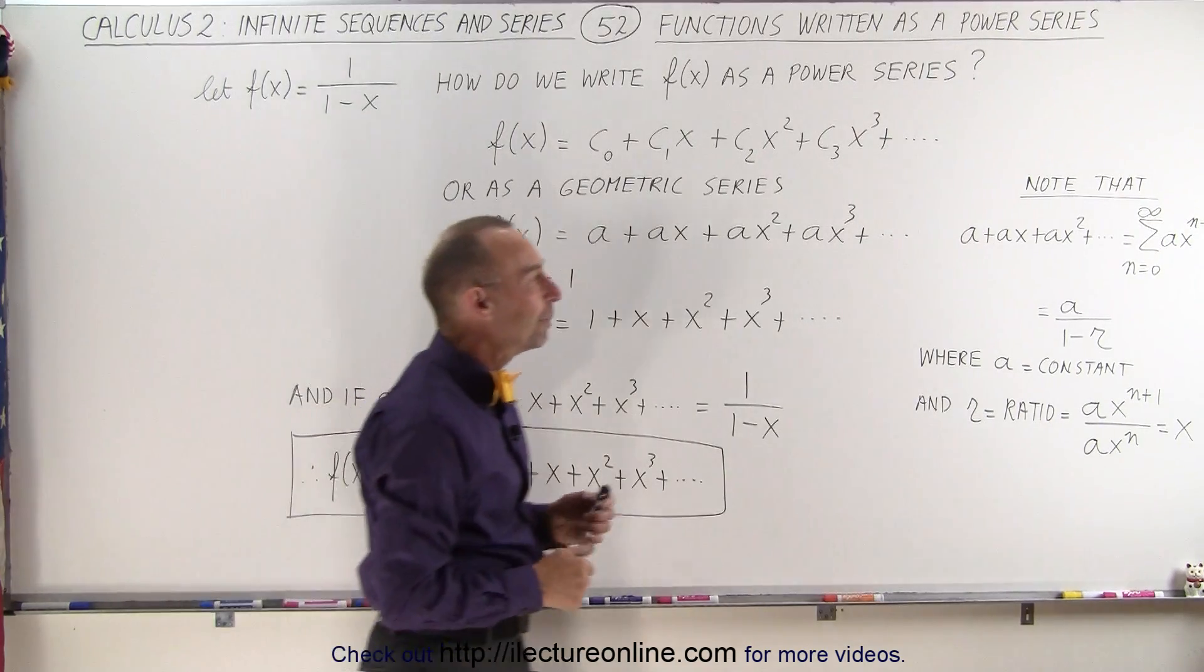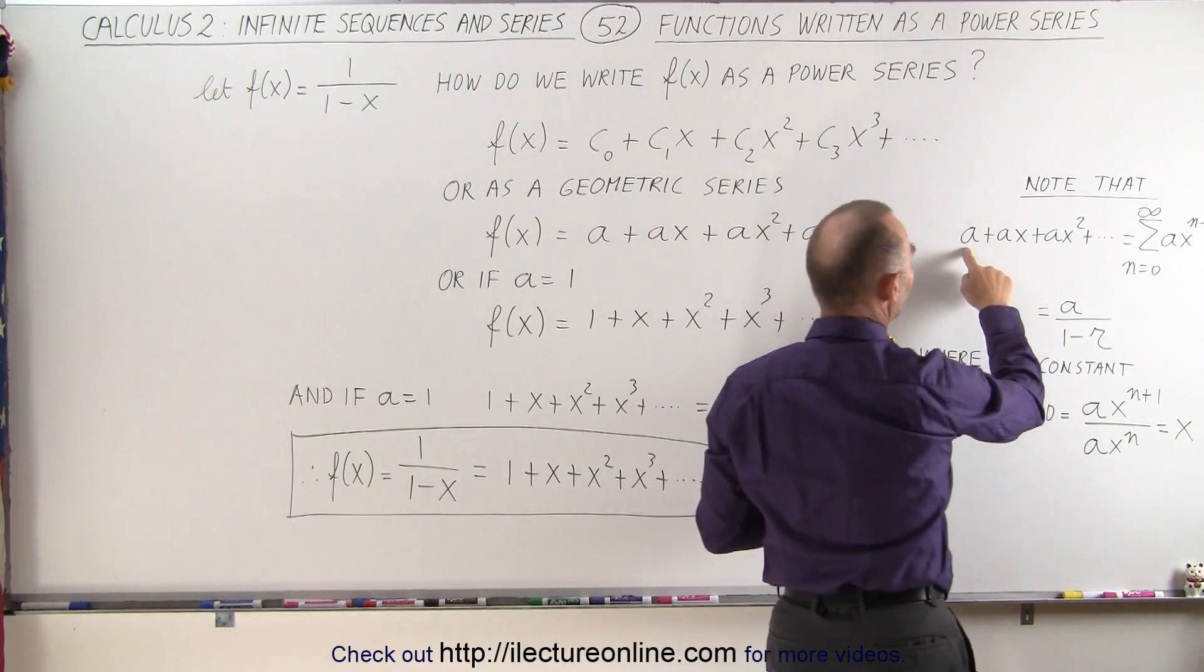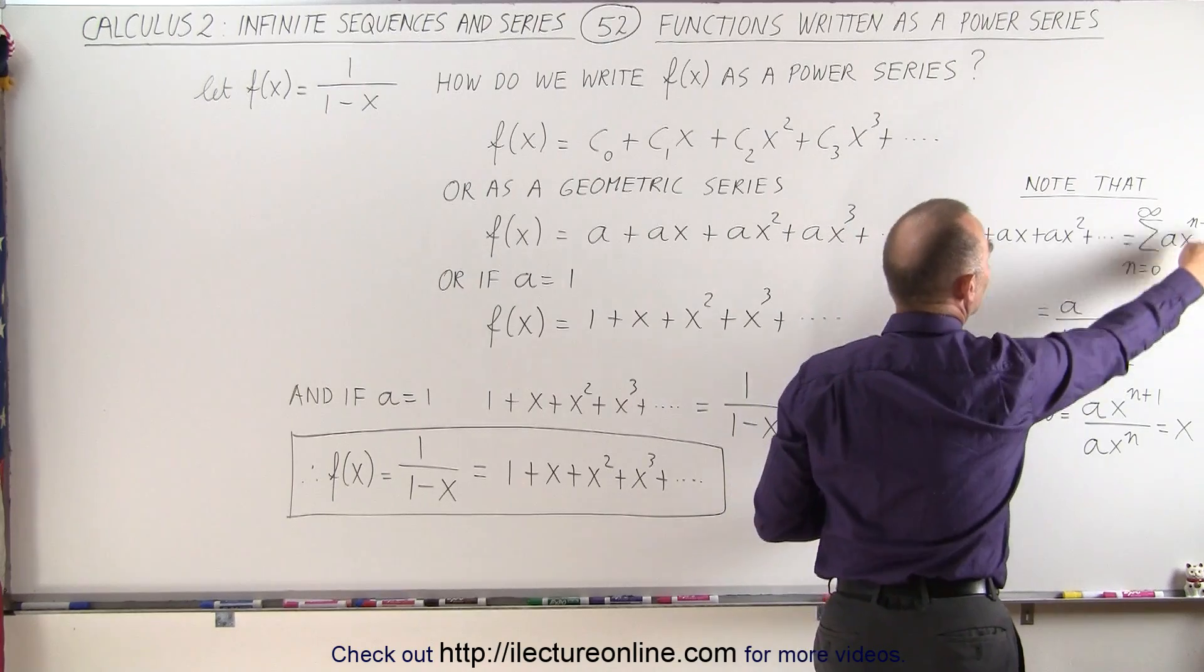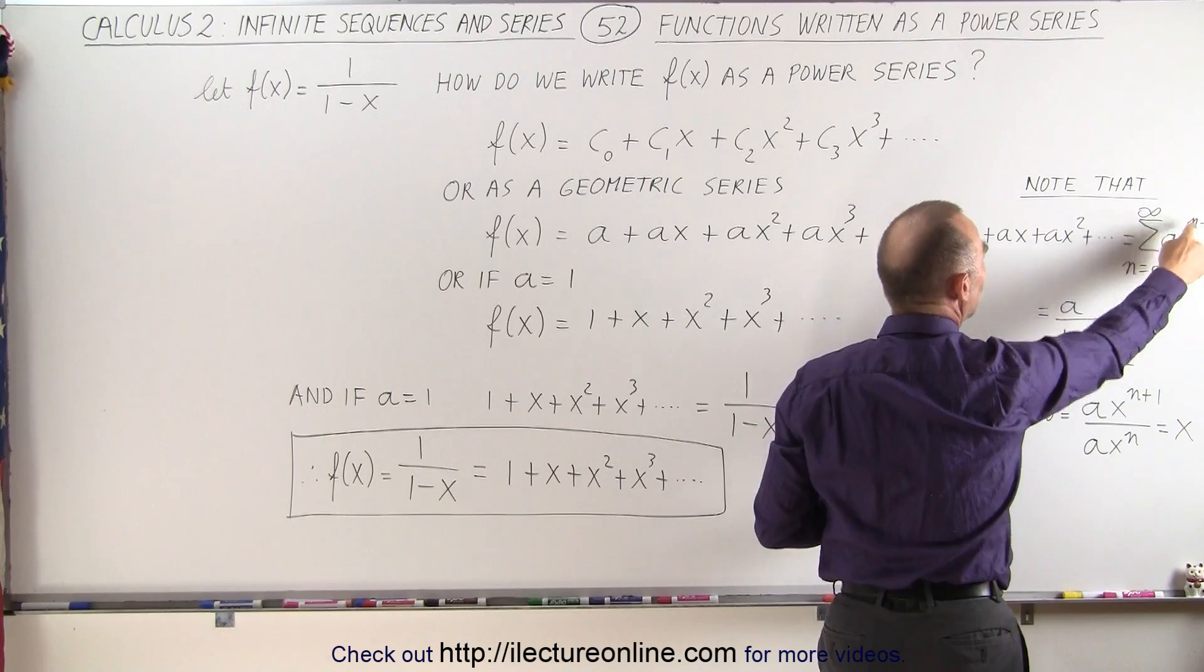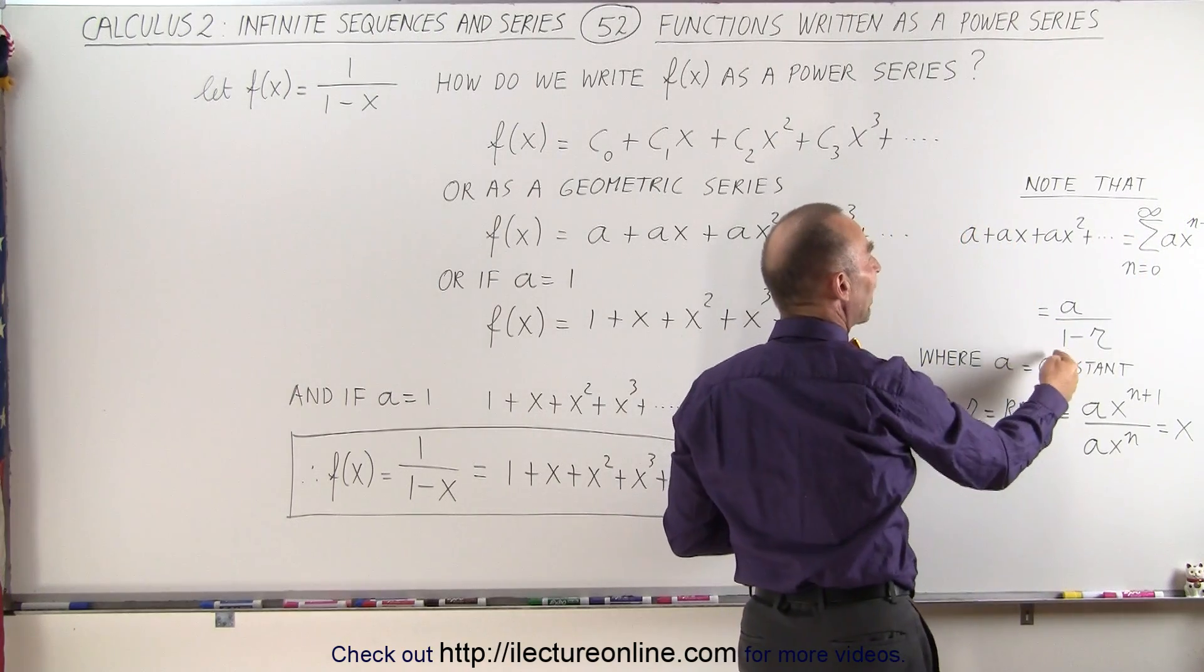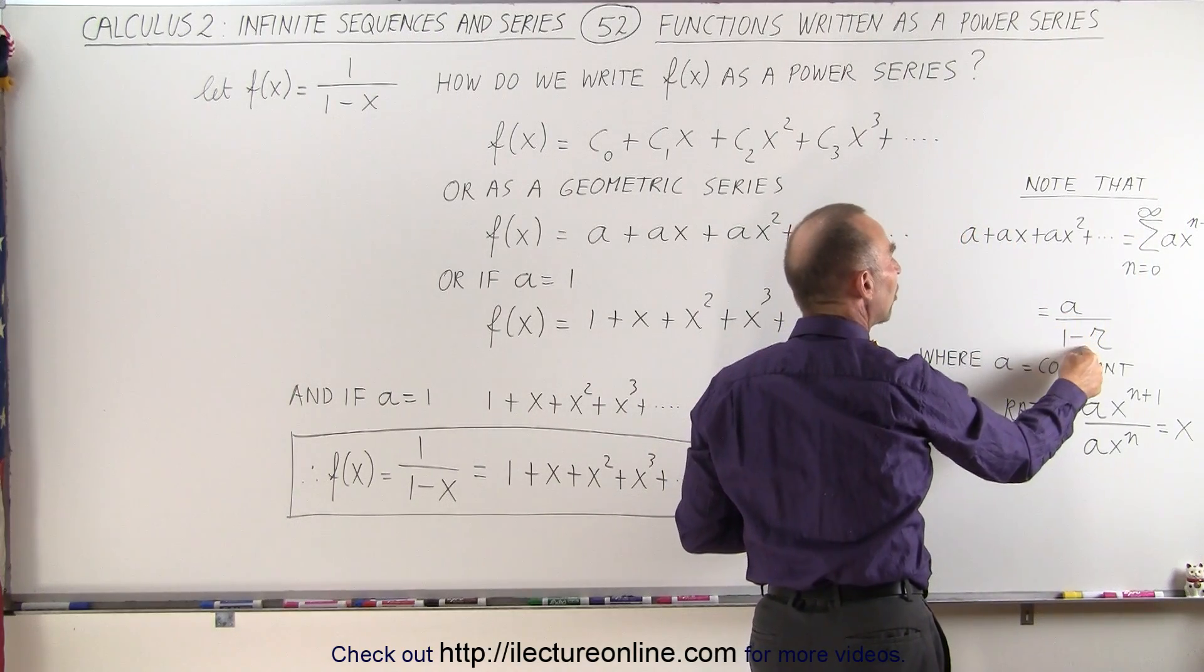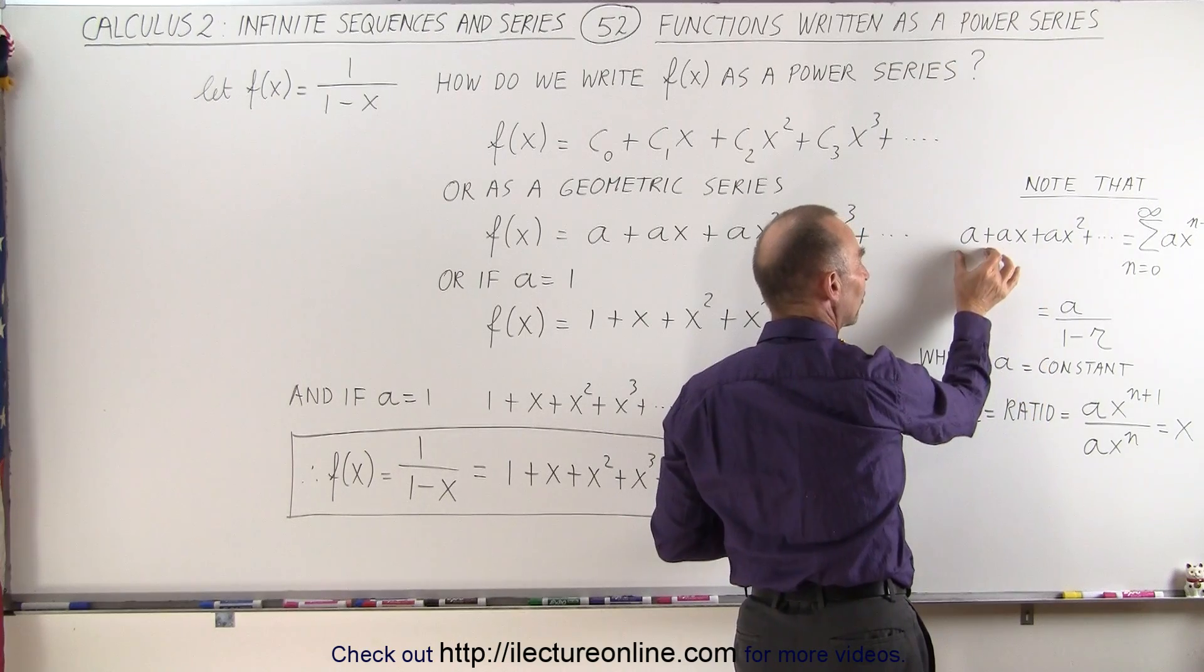Now, we have to remember that a geometric series like this can be written as the infinite summation, n equals 0 to infinity, of a times x to the n minus 1, which is defined as a divided by 1 minus r, where a is that constant here,